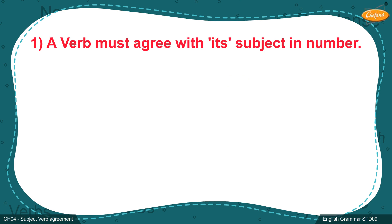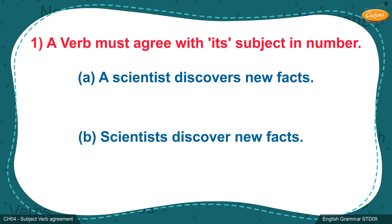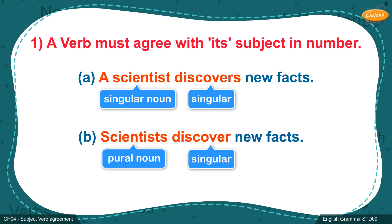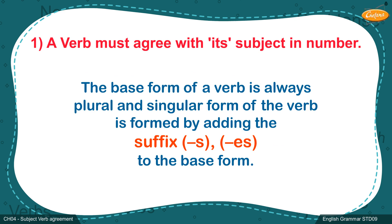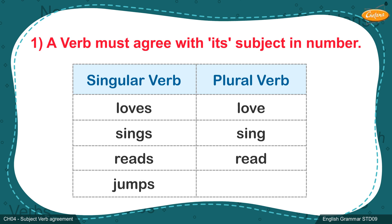Rule 1: A verb must agree with its subject in number. Example A: 'A scientist discovers new facts.' Example B: 'Scientists discover new facts.' In sentence A, the subject 'a scientist' is a singular noun, hence the verb 'discovers' is singular. In sentence B, the subject 'scientists' is a plural noun, hence the verb 'discover' is plural. The base form of a verb is always plural, and the singular form is made by adding the suffix S or ES. For example: singular 'loves' / plural 'love'; singular 'sings' / plural 'sing'; singular 'reads' / plural 'read'; singular 'jumps' / plural 'jump'.